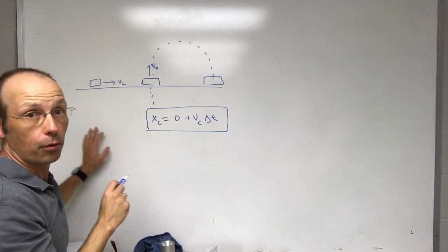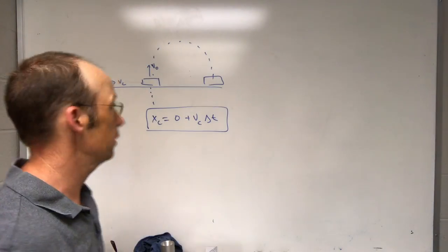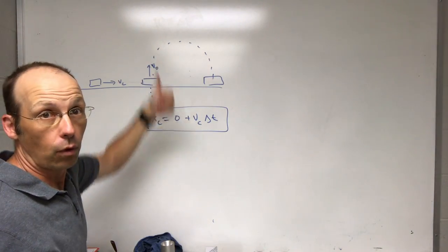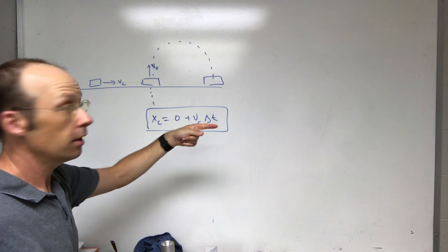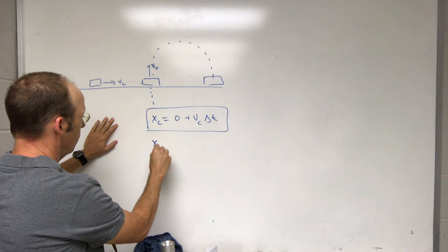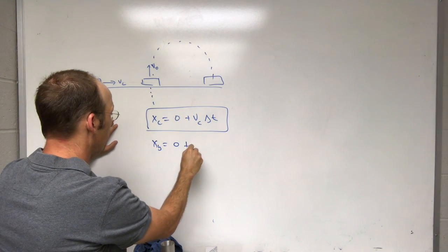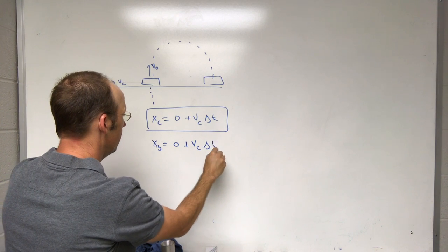Now the motion of this one is a little bit more complicated because it's moving in two directions. It's moving in the y-direction and in the x-direction. In the x-direction, x_ball equals zero, because it starts at x equals zero, plus v_c delta t.